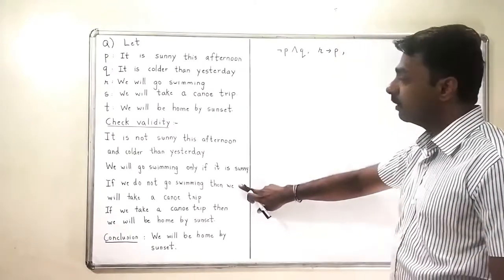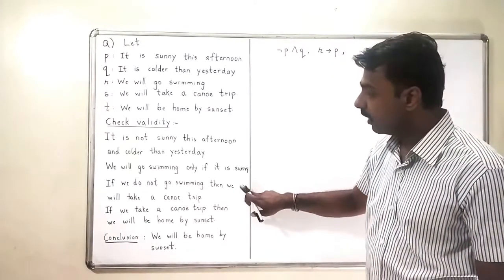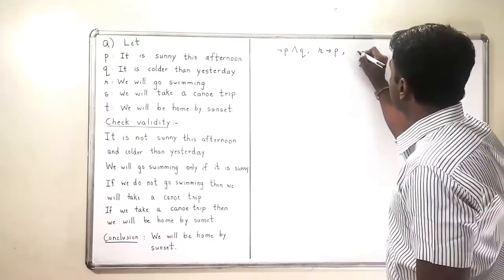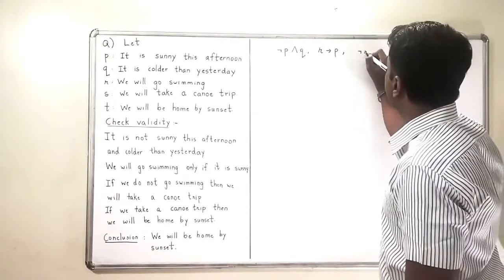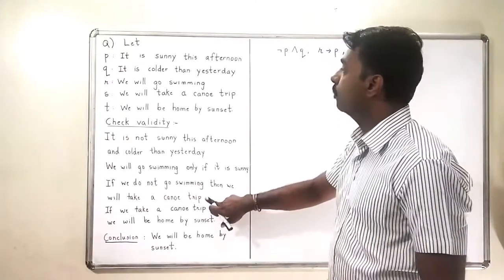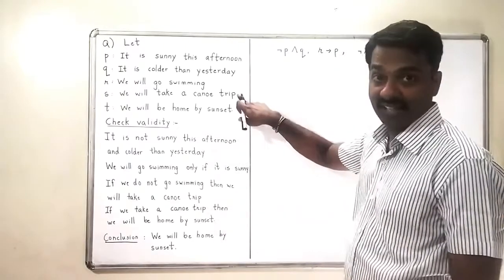The third statement in the argument is if we do not go swimming, means negation R, then we will take a canoe trip. We will take a canoe trip is S.